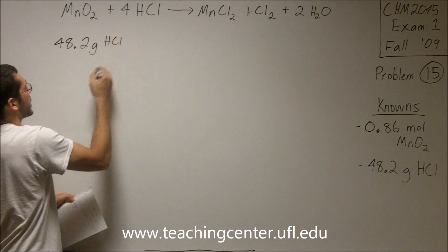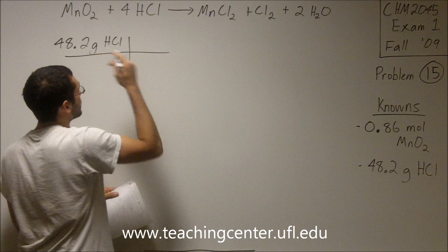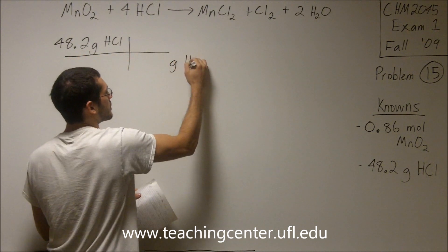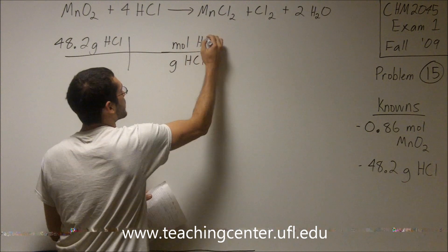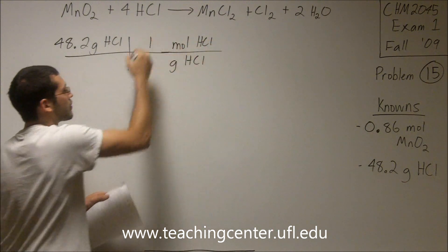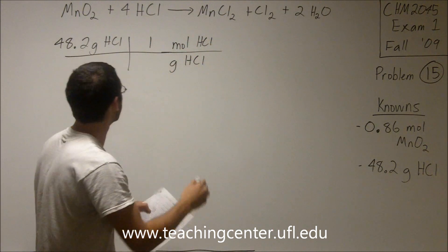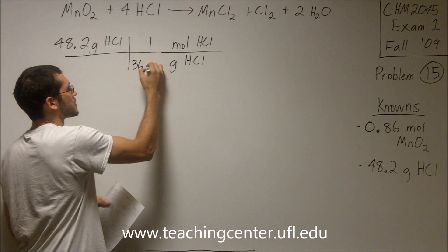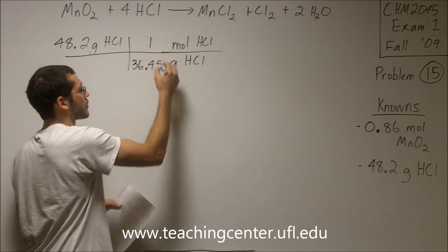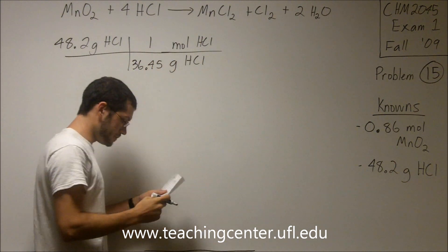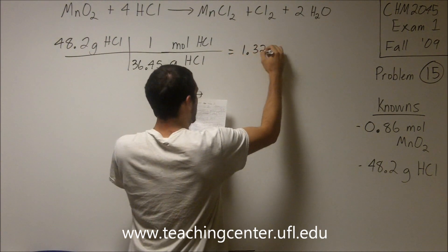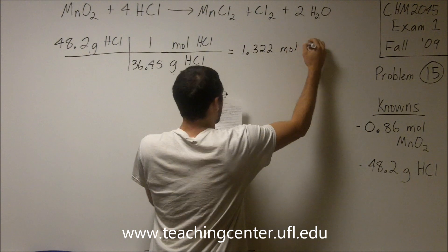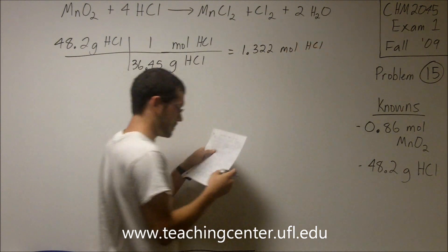Setting up my grams HCl. I need grams HCl on the bottom. I need moles HCl on the top. For every one mole HCl, I have 36.45 grams HCl. This comes out to be 1.322 moles HCl.